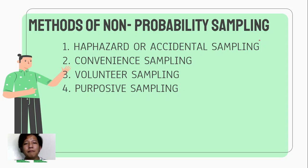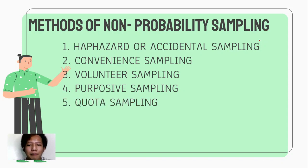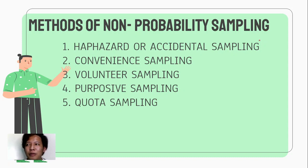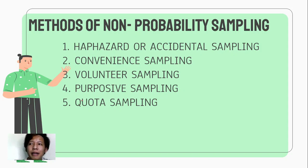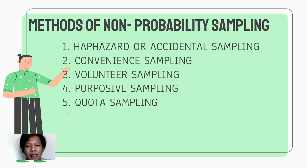Number four, purposive sampling — hindi ito base sa purpose mo kundi base sa purpose ng study mo. Number five, quota sampling. Kay quota sampling, pwede kang mag-convenient sampling pero may quota ka. For example, sampung interviewee lang yung kailangan ko. Kay convenience sampling, okay na sa lima, pero kay quota sampling, meron kang tinakdang limit — whatever it takes, kailangan mong ma-reach yung quota mo.